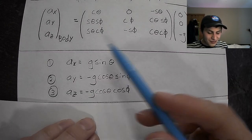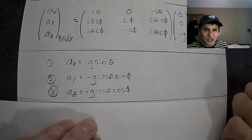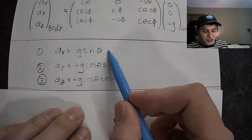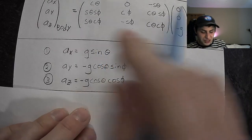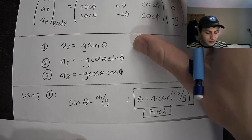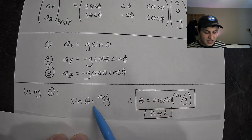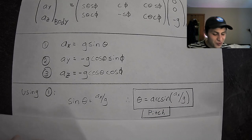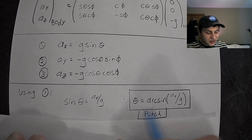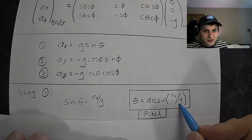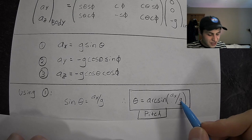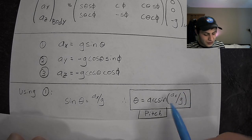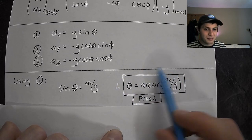Very obviously, we can use the first equation to solve for our pitch angle. Just rearranging, bada bing bada boom — our pitch angle is equal to the arc sine of ax over g, where ax is our x accelerometer measurement and g is 9.81 meters per second squared. So this is the expression for our pitch angle.